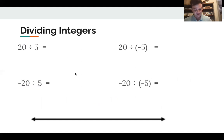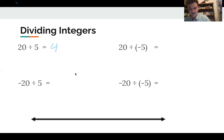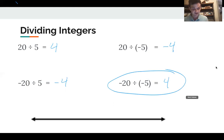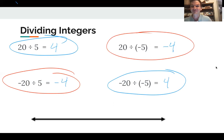Let's look at some examples. 20 divided by 5 — that's just 4, basic fourth-grade math. 20 divided by negative 5 — there's one negative sign, so the answer flips to negative 4. Negative 20 divided by 5 — again, one negative sign, so the answer is negative 4. And negative 20 divided by negative 5 — the negatives cancel out, giving us positive 4. So no negatives and two negatives give the same answer, and one negative in either position gives the same answer.